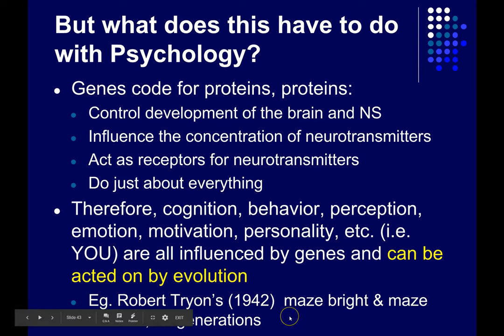An interesting question is why, after 12 generations, they stopped becoming more bright and more dull. The answer is almost certainly that Tryon ran up against the limitations of the genetic variability within the population. Just as in nature, you can only select for what's there. After 12 generations or so, Tryon had selected the combination of genes that produced the very fastest and slowest rats within the existing initial population. After that, there were just no more genes to select for. In order to get these rats to become faster or slower, you would have to wait for new mutations or recombinations to produce new heritable variations.